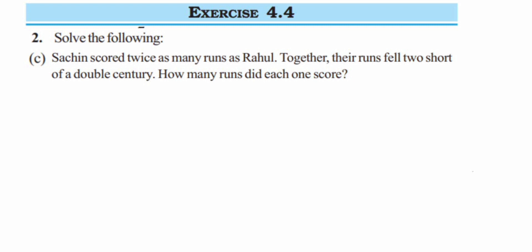Hi kids, so here I'm doing Exercise 4.4, second question, part C. This is a question from the fourth chapter, Simple Equations, and it's a word problem. The question here is: Sachin scored twice as many runs as Rahul. Together, their runs fell two short of a double century.